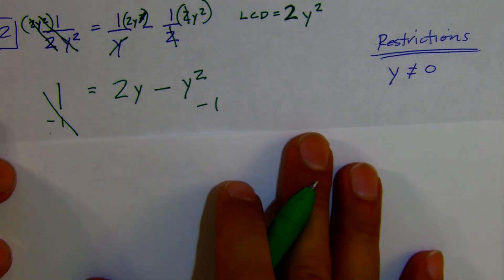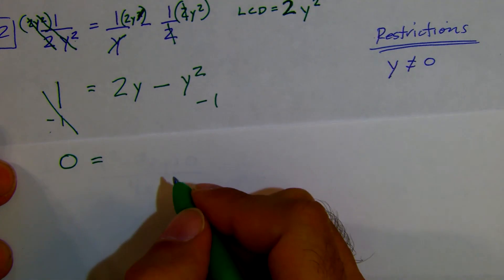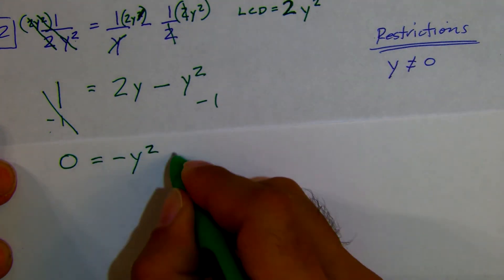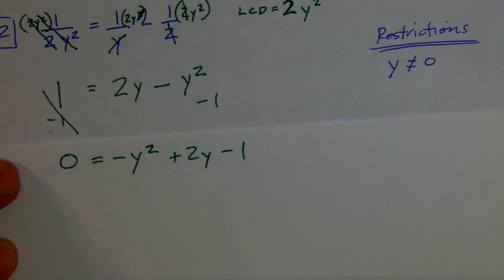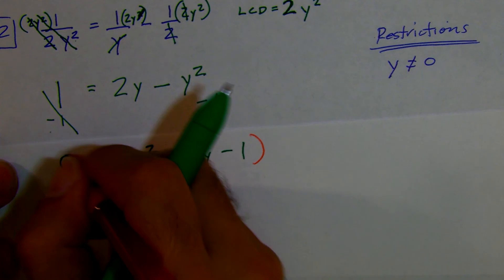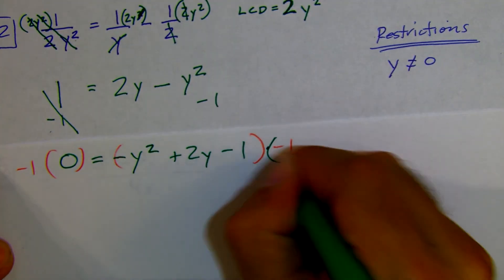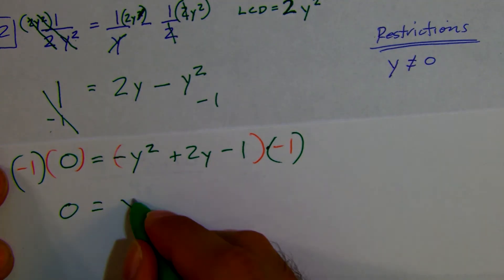We end up with 0 on the left side, which is fine. When solving quadratics, we make it equal to 0 so we can find our roots easily. But we have a negative y squared. I can multiply both sides by negative 1 to make that positive y squared — this doesn't change the roots we'll arrive at. So multiplying both sides by negative 1: 0 times negative 1 is 0, and on the right side we'll end up with a positive y squared trinomial.